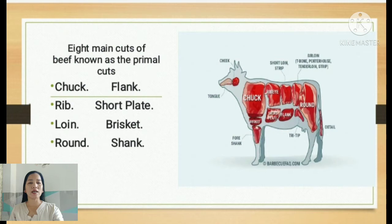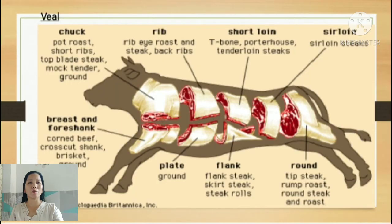For veal — meat from a young cow — there are 8 primal cuts: the chuck, ribs, short loin, sirloin, round, flank, plate, breast, and fore chunk.